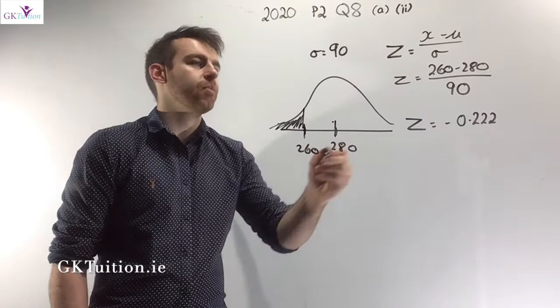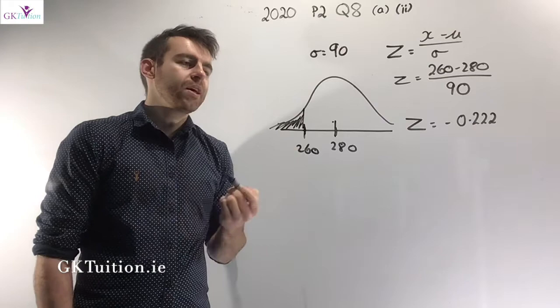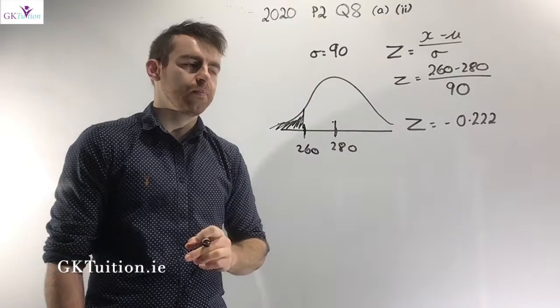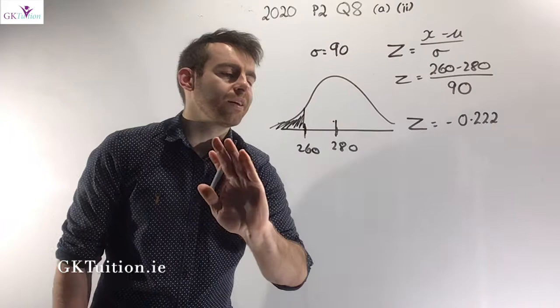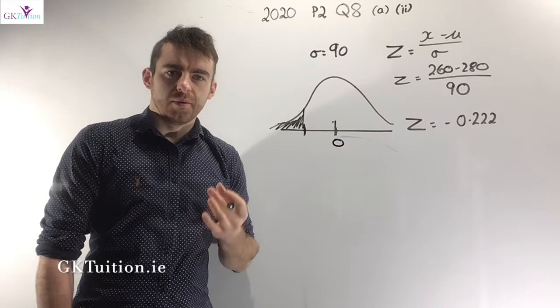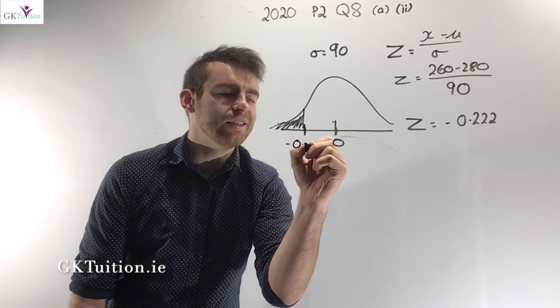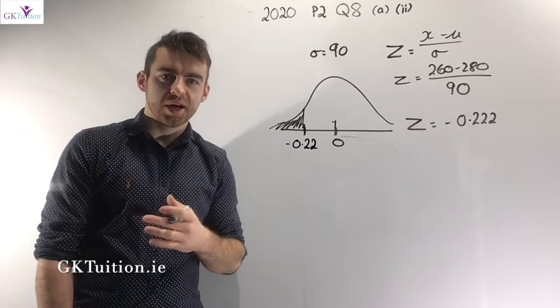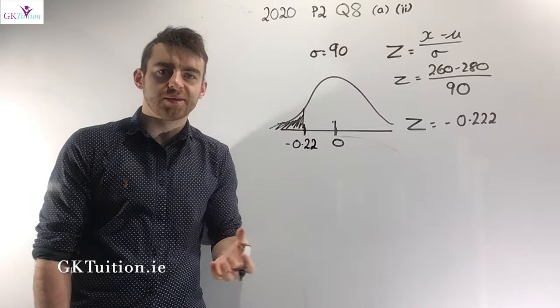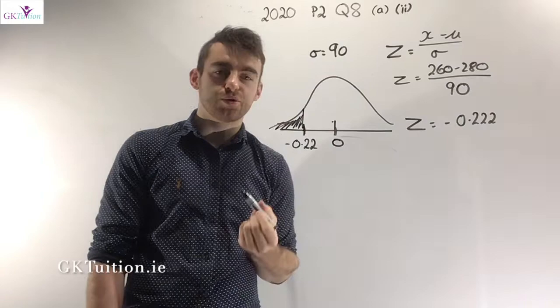Using the standardizing formula with population mean 280, standard deviation 90, and Eileen's score of 260: z = (260 − 280) / 90 = −0.222. Rounded to two decimal places — since the maths tables on pages 36 and 37 are accurate to two decimal places — Eileen's Z-score is −0.22.